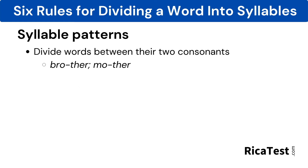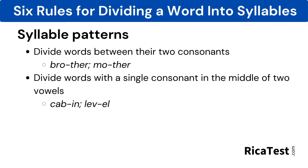Next, divide words between their two consonants, for example, brother and mother. Divide words with a single consonant in the middle of two vowels, for example, cabin and level.